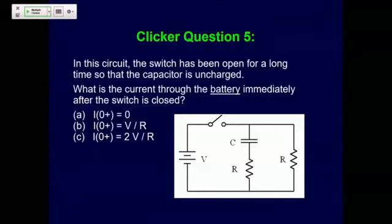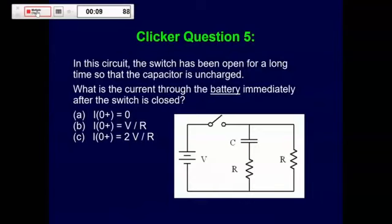Let's do an example. In this circuit, the switch has been open for a long time so the capacitor is uncharged. What is the current through the battery immediately after the switch is closed? The charge on the capacitor is zero. Think about this, talk to your neighbors, and we'll discuss it.